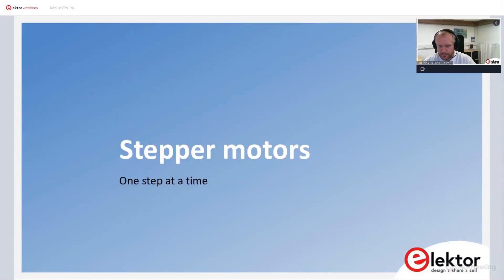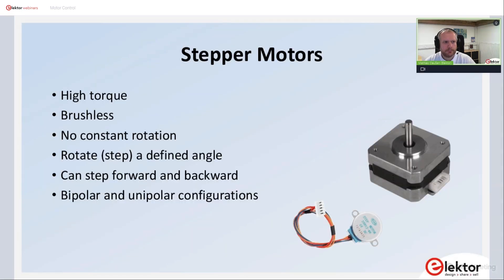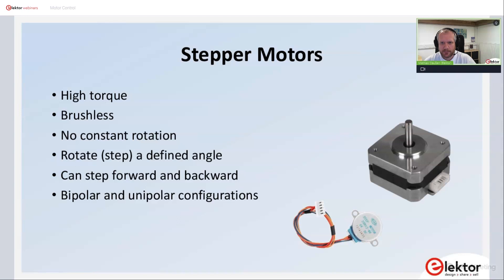With that short walk-through of H-bridges, the next thing to look at are stepper motors. They don't do continuous rotation but move one step at a time. Stepper motors offer high torque for every step, they don't have brushes so there are no contacts to the rotor, they have no constant rotation but a defined angle per step, and can step easily forward and backward. For stepper motors there is also the distinction between bipolar and unipolar configurations, which you will also find in the ebook we provide.